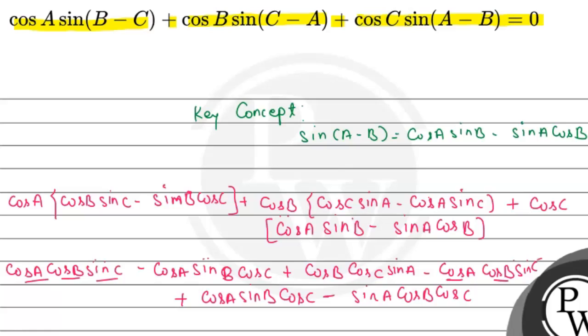Because one positive sign and one negative sign will be cancelled out. Similarly, sin A cos B cos C cancelled out, negative and positive. Similarly, this last term will be cancelled out because they are the same identity but opposite sign. So the answer will be zero.